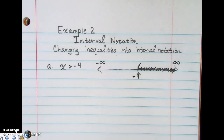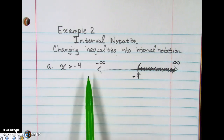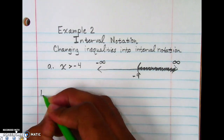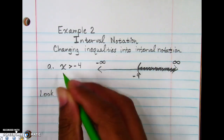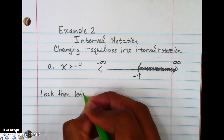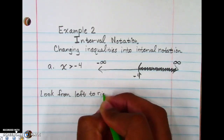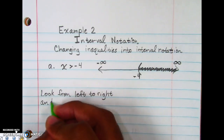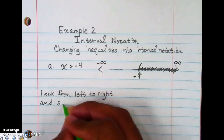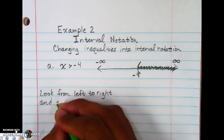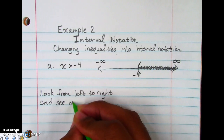When we're changing this from the graph to interval notation, that's the very easiest thing. We look from left to right and see where the shaded part starts and stops.